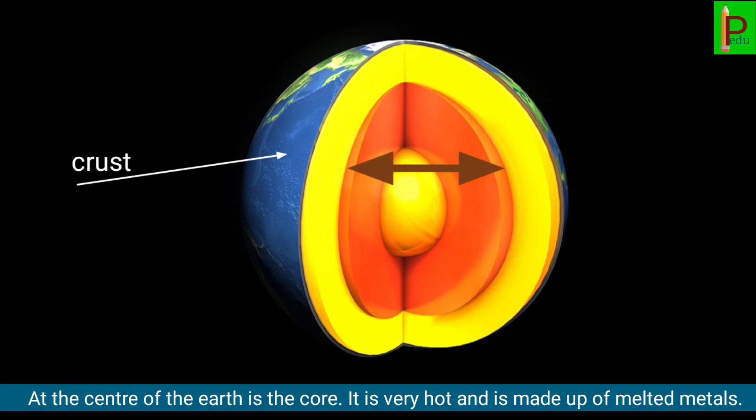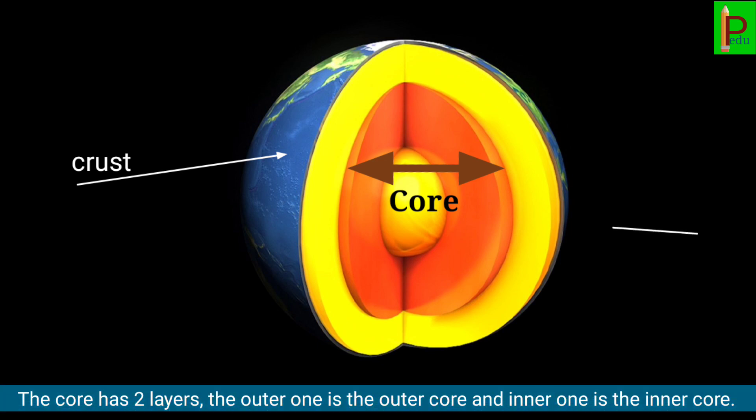Children, at the center of the earth is the core. It is very hot and is made up of melted metals. The core has two layers.